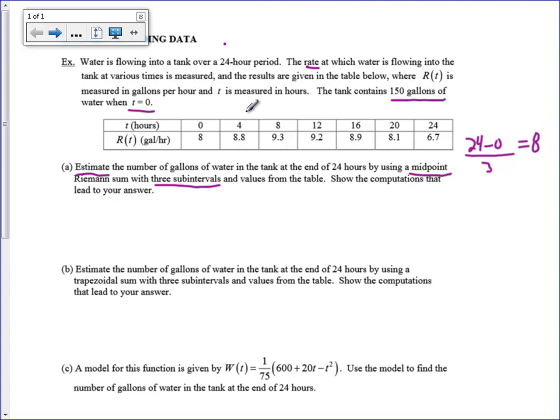So my first sub-interval is going to be from zero to eight. And we have to use the height at the midpoint. Now, to get the exact answer, I would be doing the integral from zero to 24 of R of t dt. If I knew that function perfectly, this would give me the amount of water in the tank at 24 minus the amount of water in the tank at zero. That's what the fundamental theorem of calculus says.